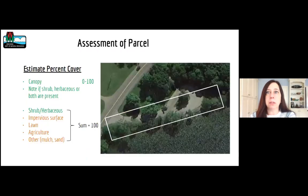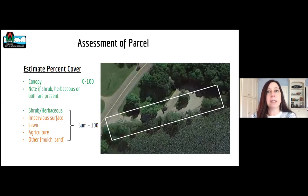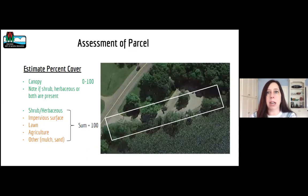The next step is to estimate the percent cover of the tree canopy, shrub, and herbaceous layers contained within 35 feet of the water. Percent cover is the percent of space each layer takes up in the buffer area. We also collected the percent coverage of impervious surfaces, manicured lawn, agriculture, and other items such as duff, soil, and mulch.